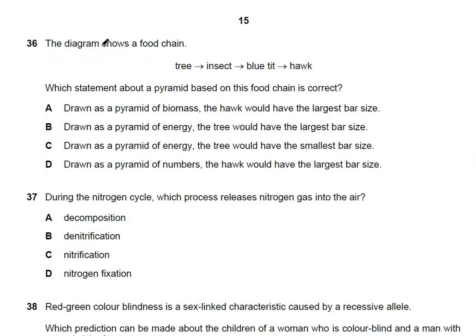Question 36: a food chain shows tree → insect → blue tit → hawk. For a pyramid of biomass, the hawk would not have the largest bar — insects on a tree would be more numerous. For a pyramid of energy, the tree at the lowest trophic level possesses the highest amount of energy and would have the largest bar. The answer is B.